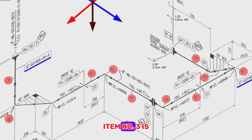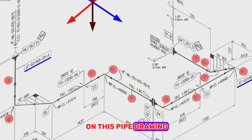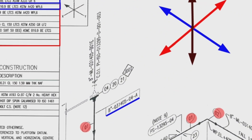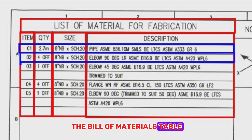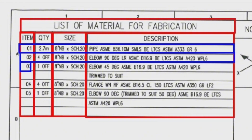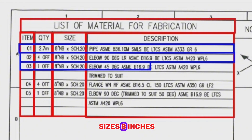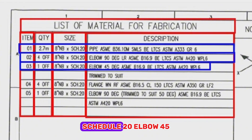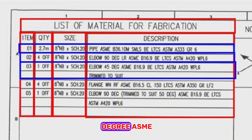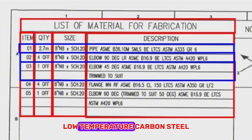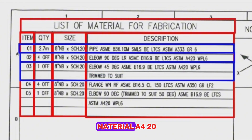Item number 3 is shown in one place on this pipe drawing. Looking at the Bill of Materials table: Item number 3, the quantity is 1 off, size 8 inches, schedule 20, elbow 45 degree, ASME, low-temperature carbon steel material, A420.